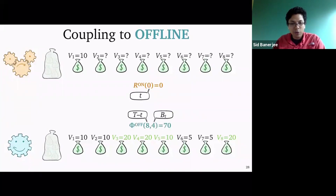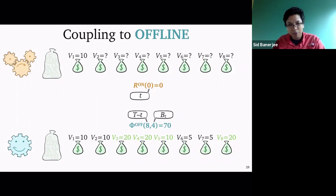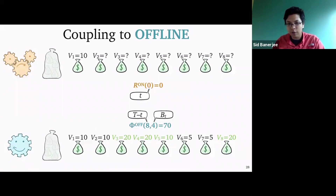I also define this quantity phi_offline, which takes two parameters: T minus t, the remaining horizon, and b_t, the current budget. At the initial time, T equals 8 so T minus t is also 8, and the initial budget is 4. The offline problem knows exactly what's coming and will select the top 4 items — the ones highlighted in green — which add up to phi_offline = 70. This is the value function of the offline problem knowing everything in the future, starting with budget b_t and horizon T minus t.